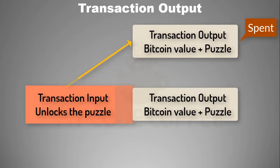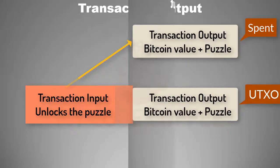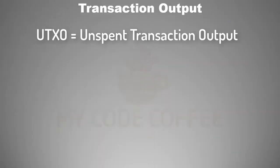Because now no one can spend the old output, these new transaction outputs are now the active outputs and they are unspent. That is why they are called unspent transaction outputs, or UTXO. So UTXO is the active unspent transaction output which can be spent by solving the puzzle.